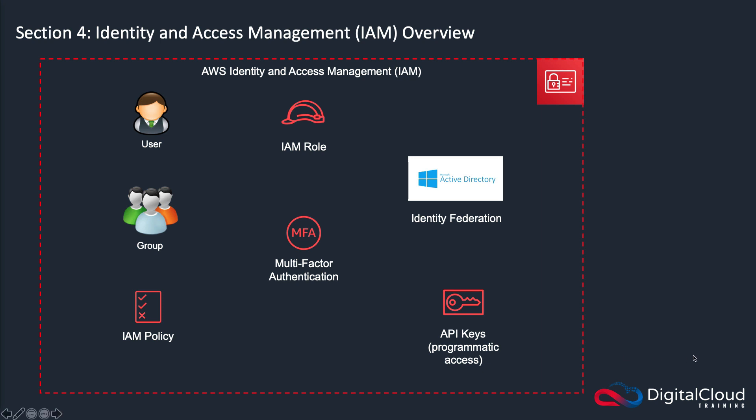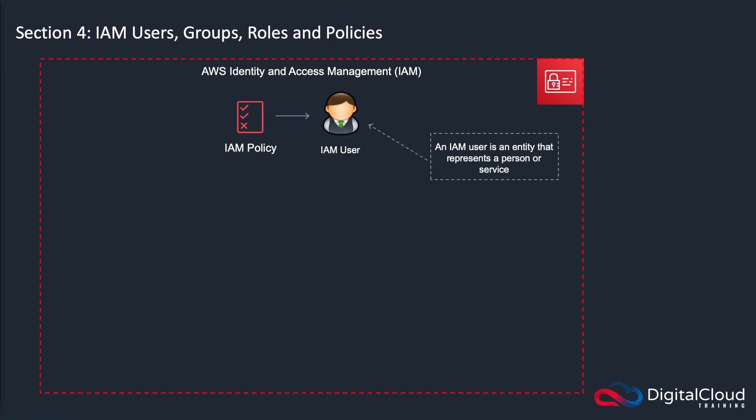We then have what's called API keys. API keys are used for programmatic access. That means if you are trying to launch or configure a service on AWS using a command line or a software development kit, you would use an API key rather than a user account to authenticate. It's a complex subject but we're going to cover that in some detail soon. So let's look at some of these core components of IAM.